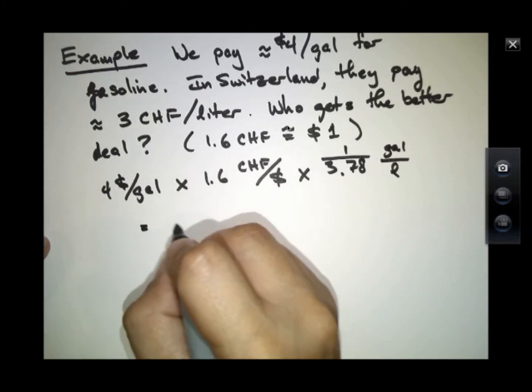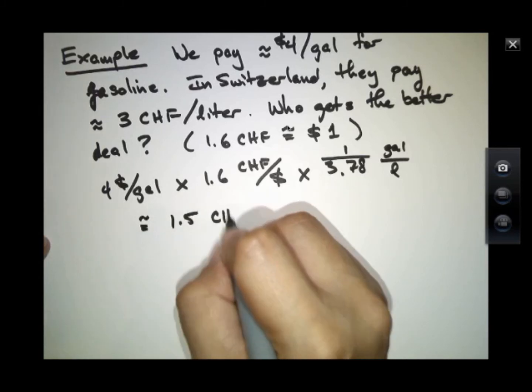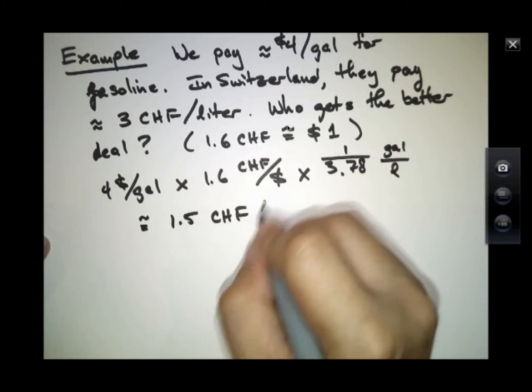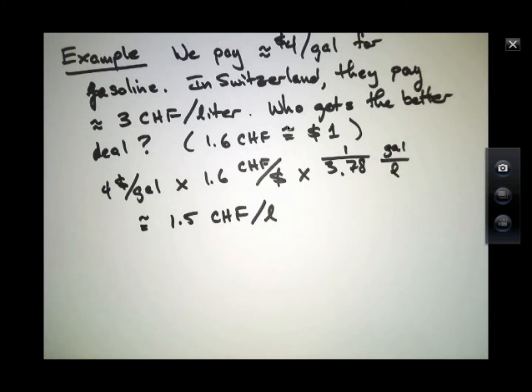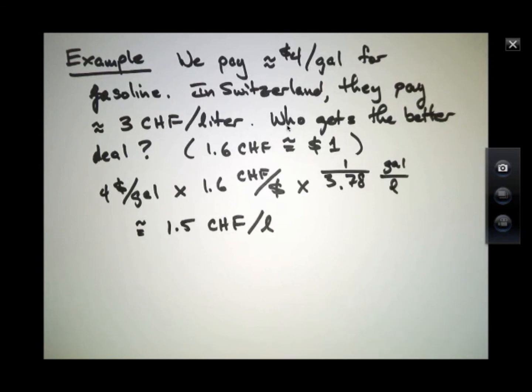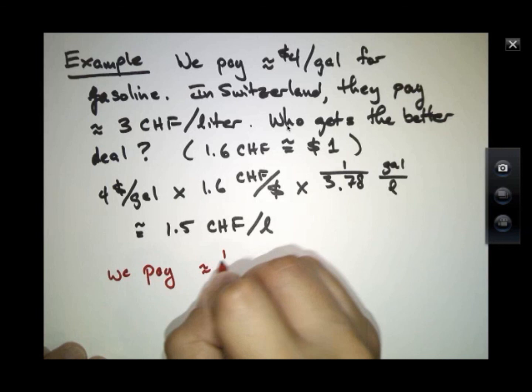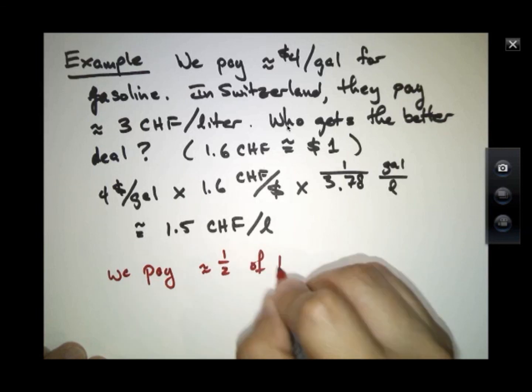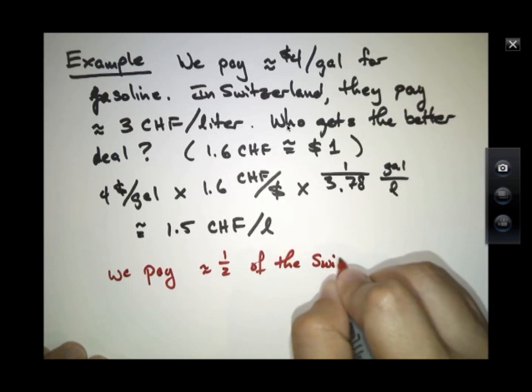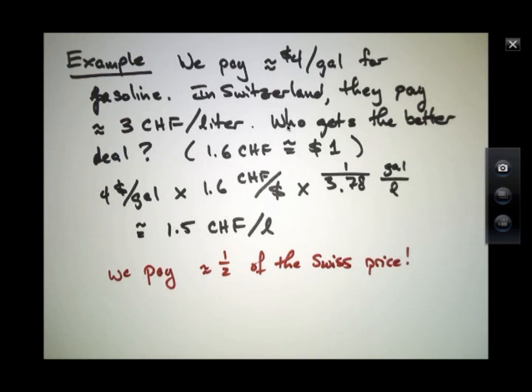And this works out to be about 1.5 Swiss francs per liter. It suggests that we pay about half as much as the Swiss do for petroleum.